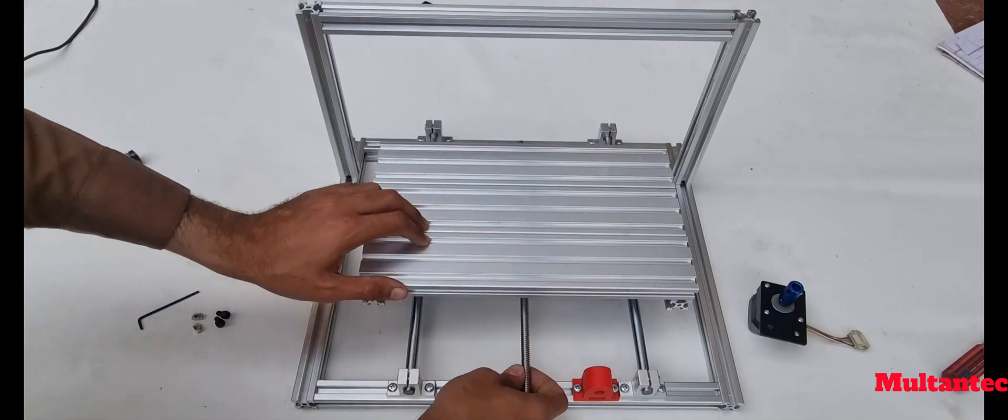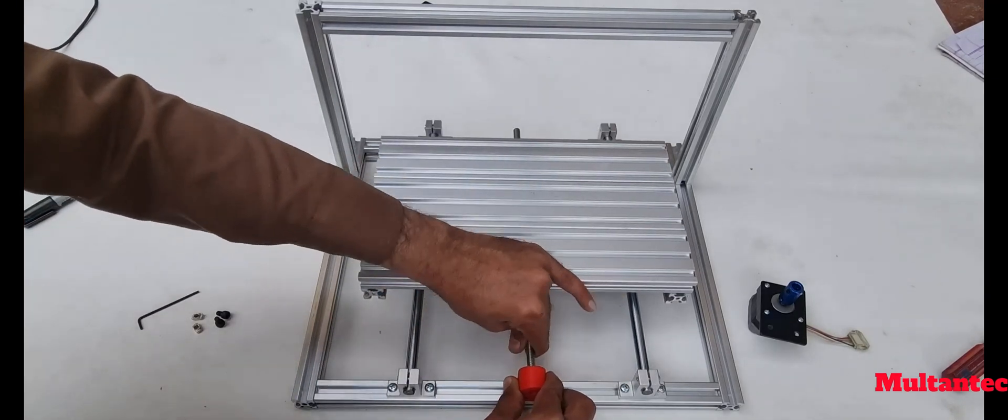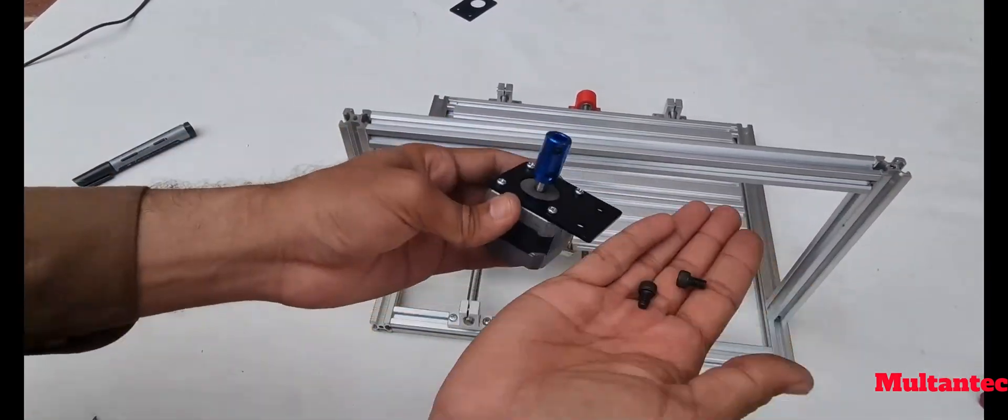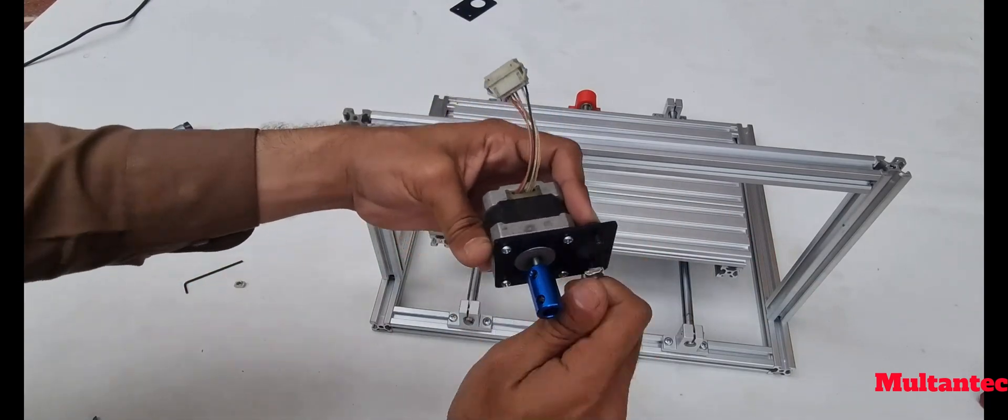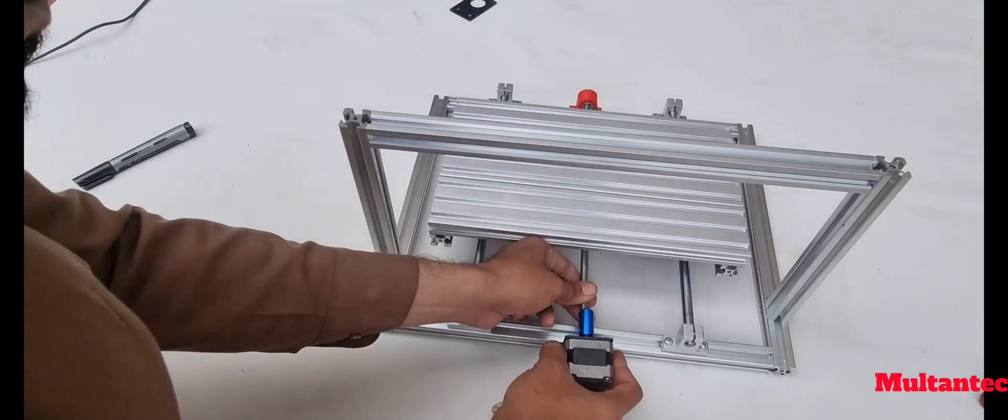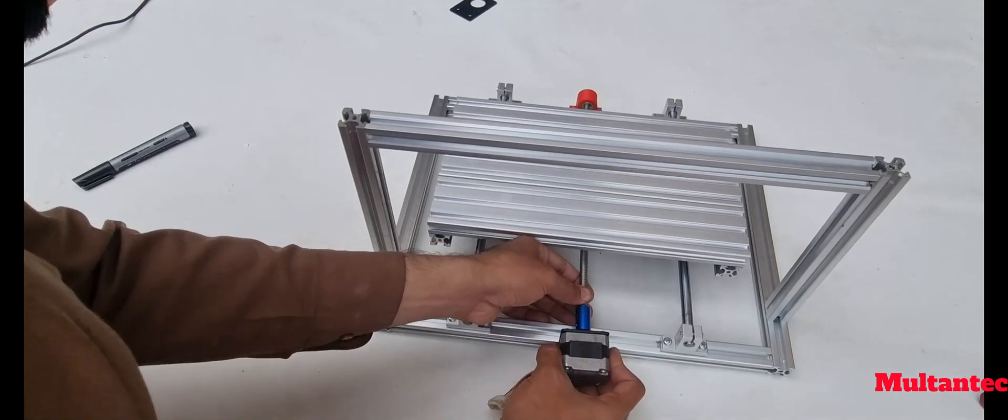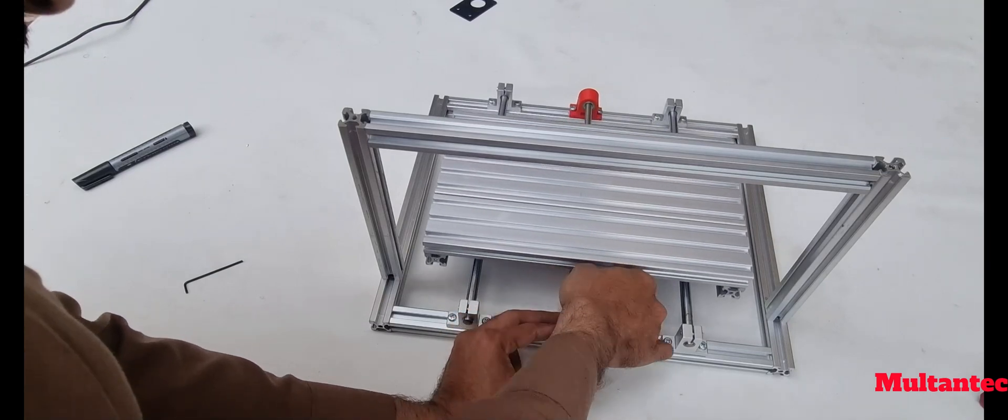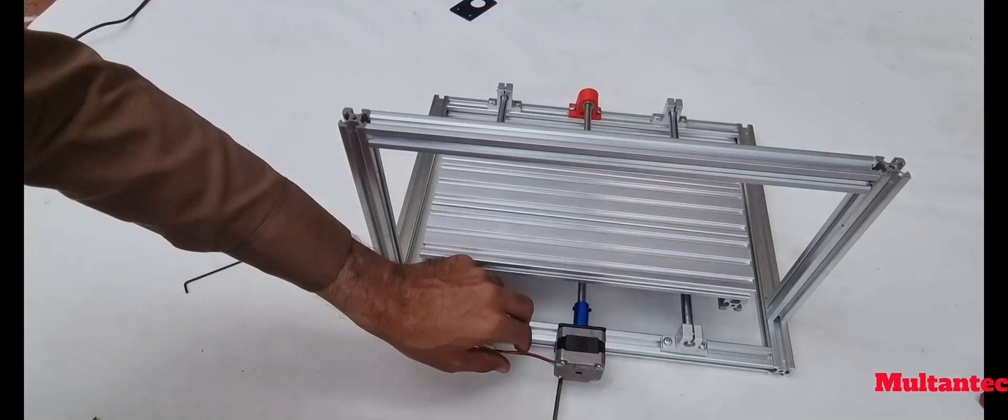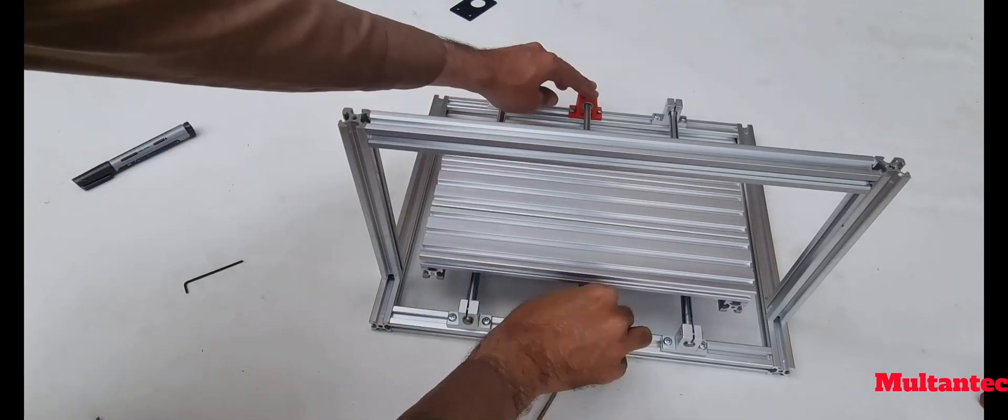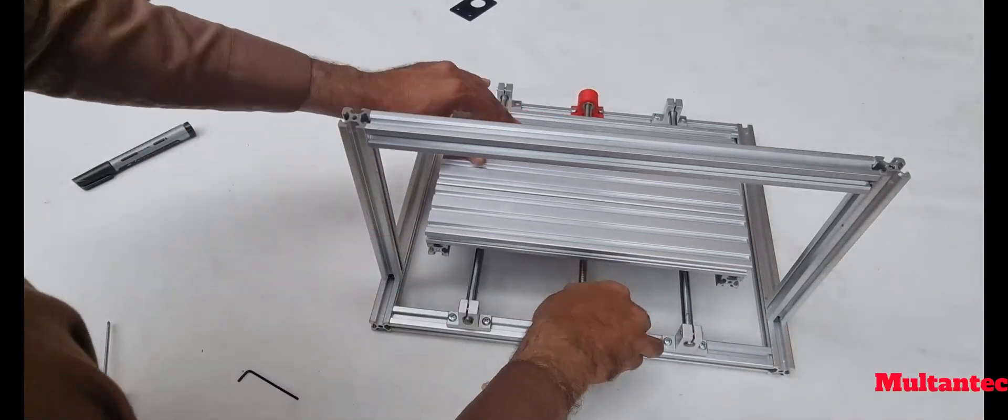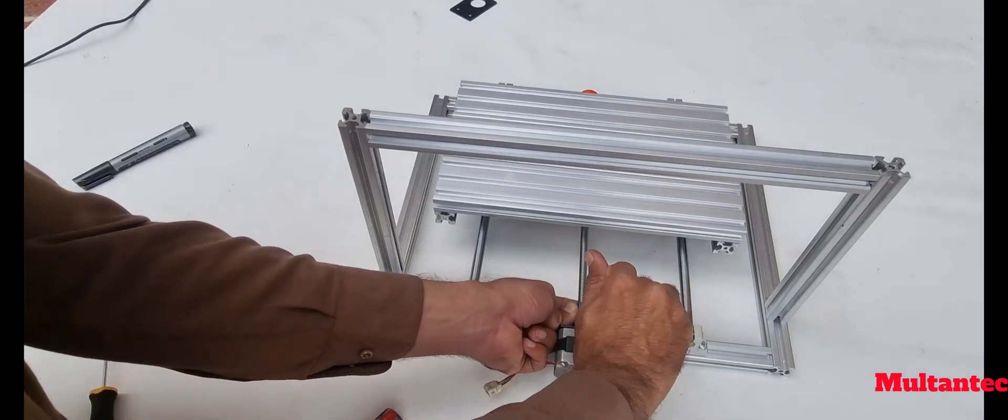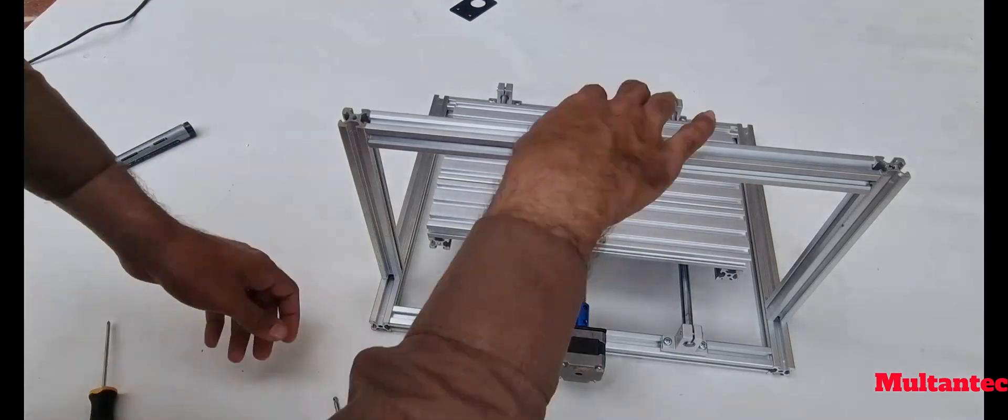Insert the 300mm lead screw in Y-axis T nut and then in the Y-axis end bracket. Mount Y-axis motor with M5 8mm socket head screw. Insert the screw inside the coupler, rotate it to bring the bed closer to the motor. It will align the motor. Then hold the motor in place and tighten it. Rotate the screw in other direction, bring the bed closer to the end bracket and then tighten the end bracket. Now tighten the coupling screws and our Y-axis is ready now.